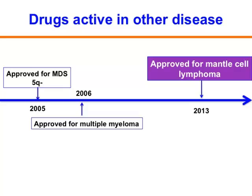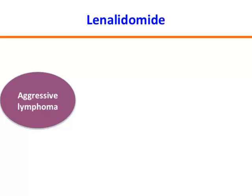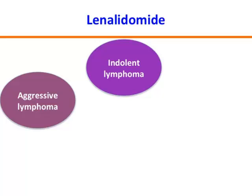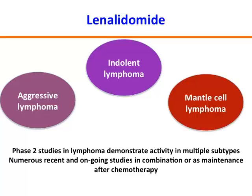Lenalidomide was approved in 2005 for myelodysplastic syndrome, in 2006 for multiple myeloma, and quite recently for mantle cell lymphoma, where it has a significant response rate in previously treated patients. The drug is now being studied in a number of different lymphoma types — it's active in a subset of aggressive diffuse large B-cell lymphoma, in follicular lymphoma, marginal zone lymphoma, CLL, and mantle cell lymphoma. There are many ongoing studies evaluating whether to incorporate it in combination with chemotherapy or use it as maintenance after stem cell transplant.